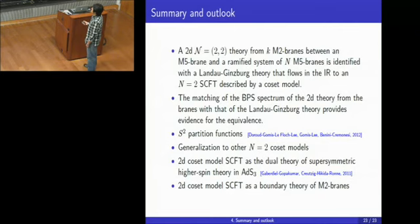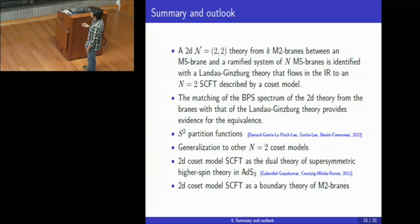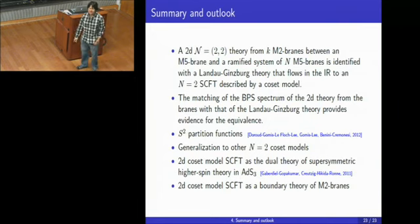There are other coset models, so it would be interesting to generalize this story to those coset models. Also, this 2D coset model superconformal field theory appears as a 2D dual CFT of the supersymmetric higher spin theory in AdS₃ space, so it would be nice to find some connection. It would also be interesting to understand this 2D theory as a boundary theory of M2 branes. This is the end of the talk — thanks.